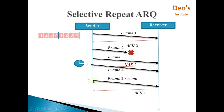Upon receiving the resent frame 2, since frame 3 and frame 4 are already received, the next frame requested from the sender is frame 1 from the next sliding window. The receiver sends acknowledgement 1, meaning frames 3 and 4 are both received correctly and you can now send frame 1 of the next window. This is how selective repeat automatic repeat request works.